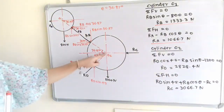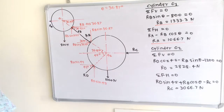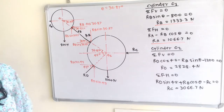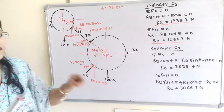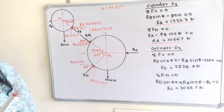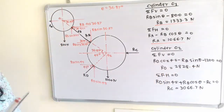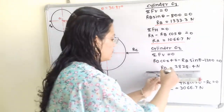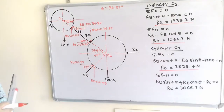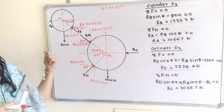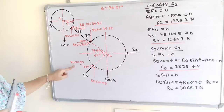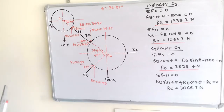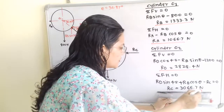For cylinder O2: Summing vertical forces (ΣFv = 0): RD·sin(45°) − RB·sin(36.87°) − 1200 = 0. Substituting the known value of RB gives RD = 2828.4 N. Summing horizontal forces (ΣFH = 0): −RC + RD·cos(45°) + RB·cos(36.87°) = 0, giving RC = 3066.7 N.